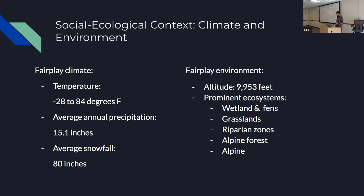The climate of Fairplay sees temperatures ranging from negative 28 to 84 degrees Fahrenheit, which has a huge effect on the types of invertebrates living there. Average annual precipitation is about 15 inches, but snowfall is very high at 80 inches per year. The environment sits close to 10,000 feet in elevation, and the prominent ecosystems are wetlands and fens, grasslands, riparian zones, alpine forest, and alpine tundra.